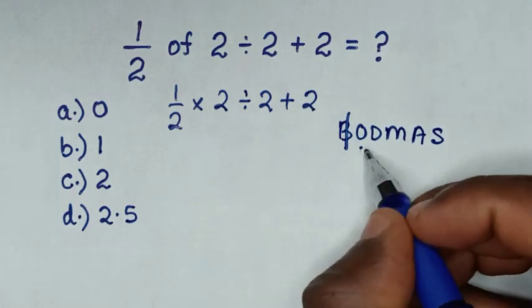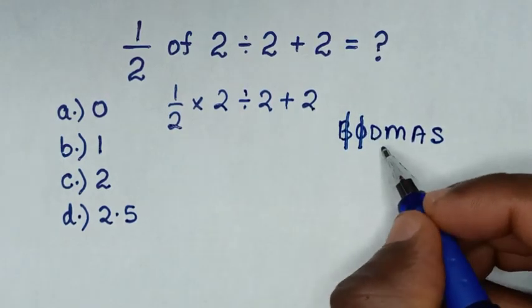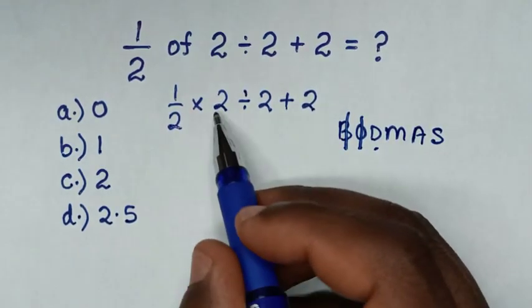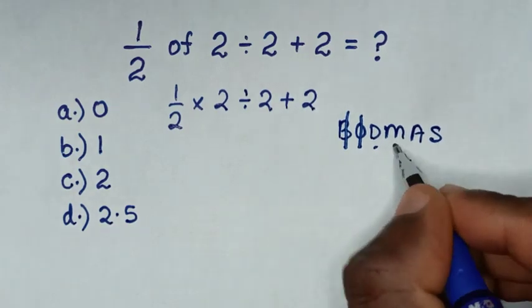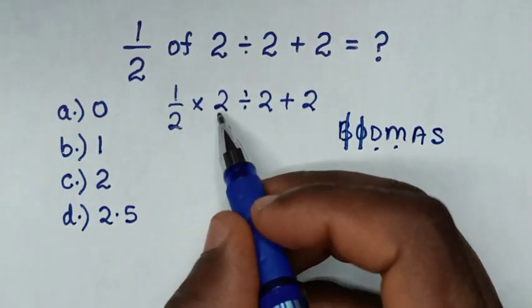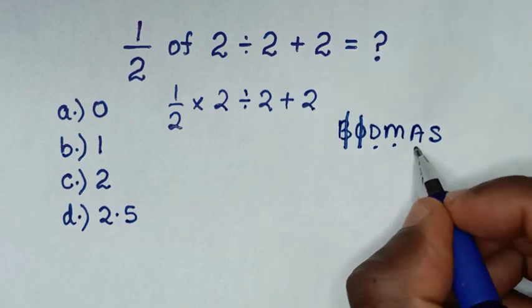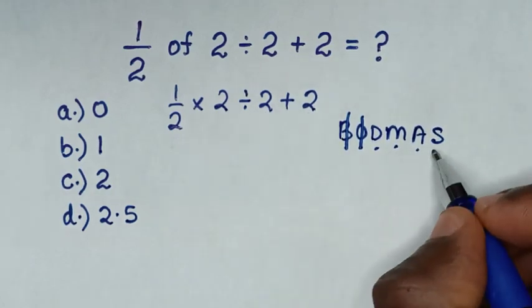But we have division which is 2 divided by 2, and we have multiplication which is a half times 2, and we have addition which is this 2 plus 2, but we don't have subtraction.